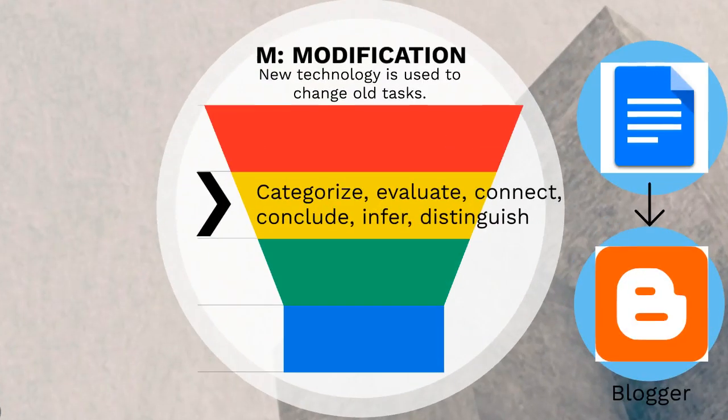Modification is when a teacher uses technology to allow for task redesign. The technology allows for a higher level of integration. For example, instead of a Google Doc, the report is shared on a blog.